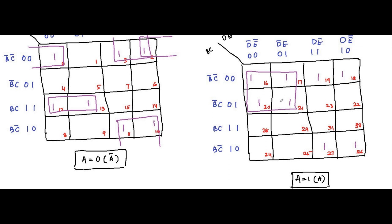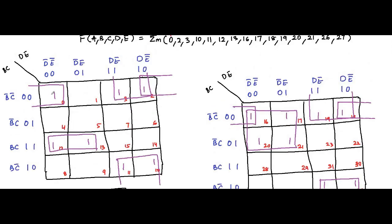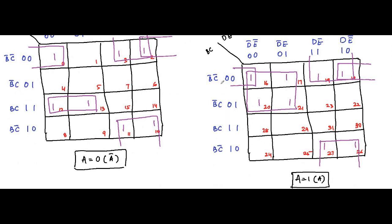Focus on cells 26, 27, 18, 19 — we can form another quad here. Then focus on cells 16 and 18 — we can form a pair. Why do we form this pair? Because cells 0 and 2 in the first K-map are at identical positions to cells 16 and 18 in the second K-map. So, the common variables from these two groups will definitely appear in the minimized expression.